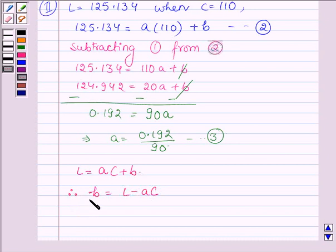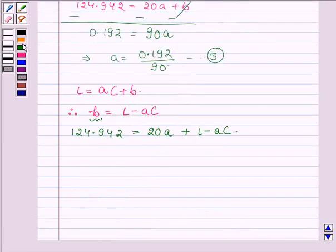Now substituting the value of B in equation number 1, which is 124.942 equals 20 times A plus B, and B is L minus AC. Therefore this further implies that L equals 124.942 plus A times C minus 20.